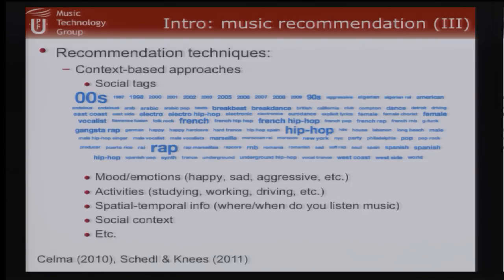We can also use other types of information: social tags — people who listen to the same music and tag it the same way; emotions — if you're happy or sad; activity context — if you're studying or partying; or spatial and temporal information — what time and where you listen to music, and your social context.